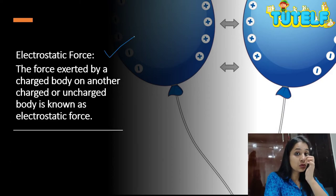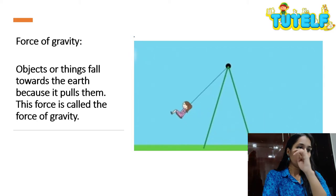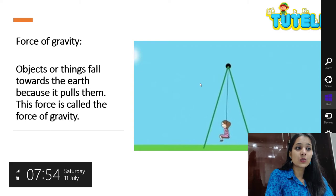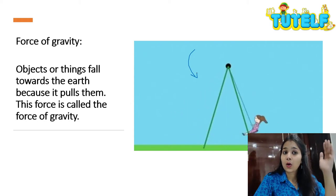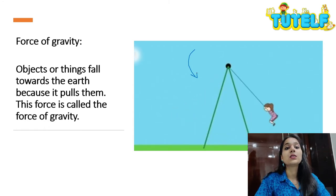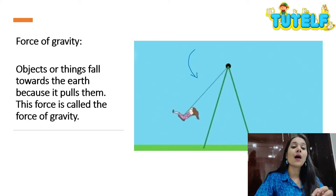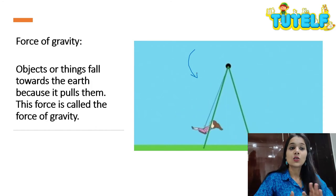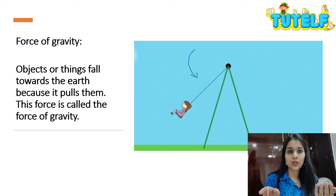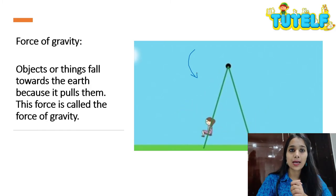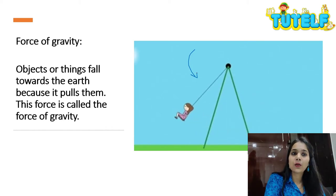Electrostatic force is an example of a non-contact force, as is magnetic force. Next, force of gravity. You must have swung on swings — that is because of gravity. The ball coming down is because of gravity. The apple that fell on Newton's head was due to gravity. The moon revolving around the earth is because of gravity. The earth revolving around the sun is because of gravity. This attraction between two objects without physical contact is force of gravity — an example of a non-contact force. Another example is a simple pendulum or a girl swinging on a swing.